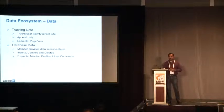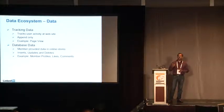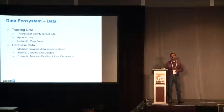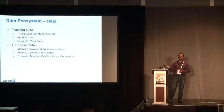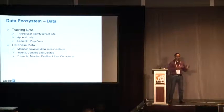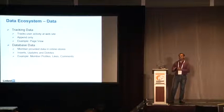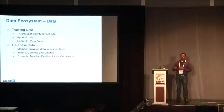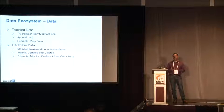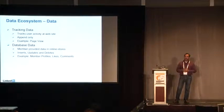The database data is the data provided by users. For example, think of the member profile that users enter on the site. This is mutable data where a member can add, change, or delete a position. This corresponds to inserts, updates, and deletes on the online data stores. This data is available as a full snapshot on HDFS, so users on Hadoop consume it as a full. Roughly speaking, this data relates to dimension data in data warehouse terminology, and the tracking data roughly translates into fact data.